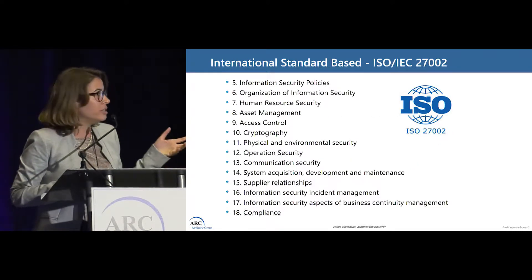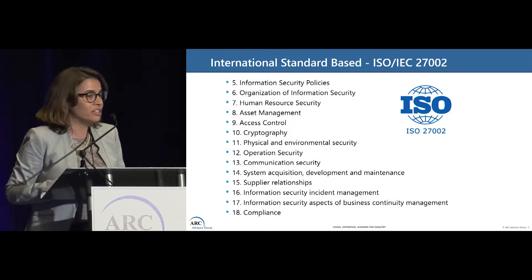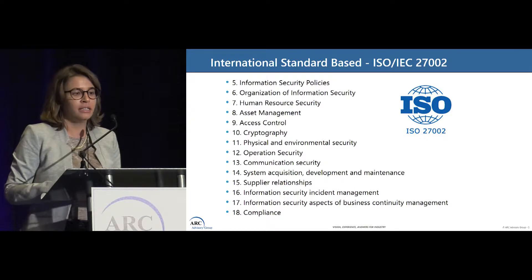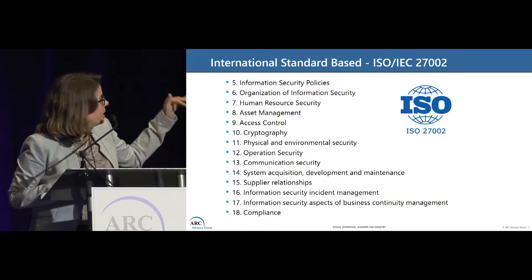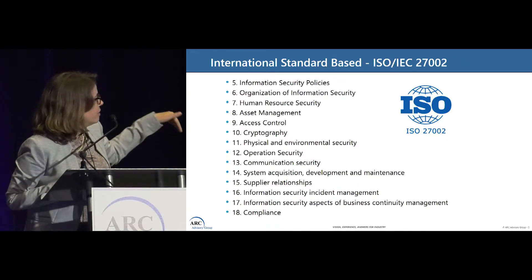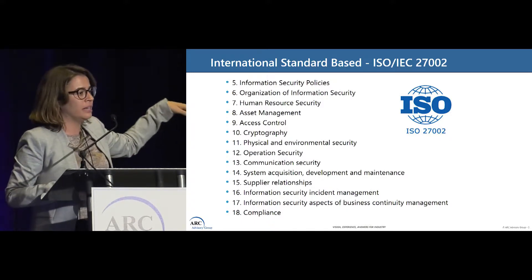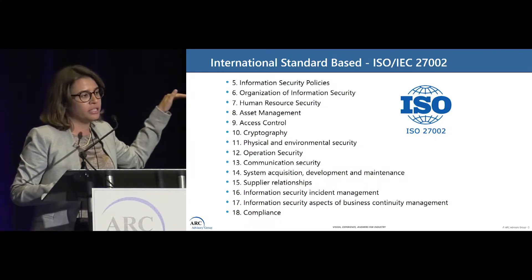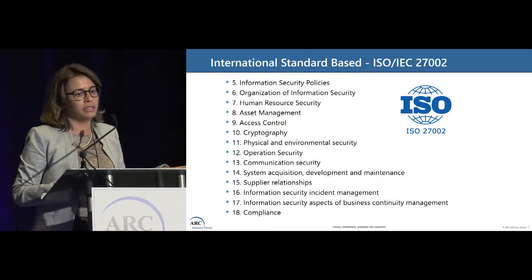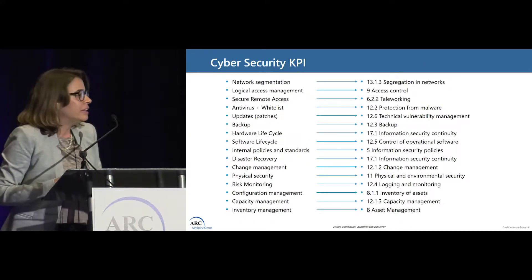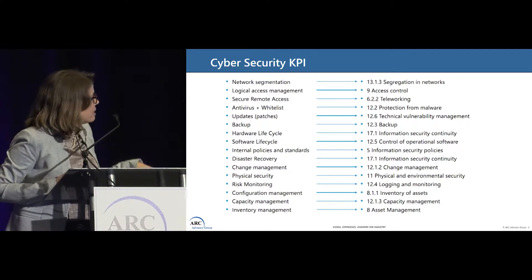This index is based on ISO 27002. It's not an industrial standard — it's from the IT side — but this standard has all the protection items listed. There are 14 sections with sub-items, and it's more than 100 items of protections. What we did was pick the controls that made sense for us and were most important for our environment. These are the evaluation items for our cybersecurity KPI, each with a correspondence to a sub-item of the standard.